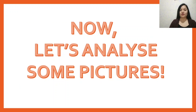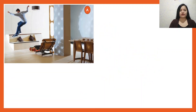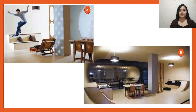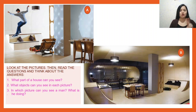Now we are going to analyze the pictures. Look here — I have picture A and picture B. There are also some questions for these two pictures. Question number one: what part of a house can you see in both pictures?